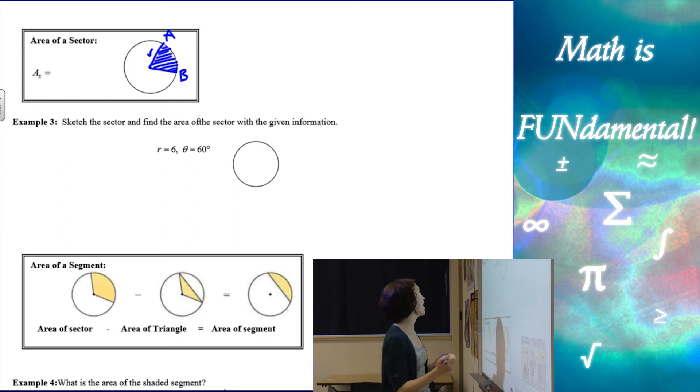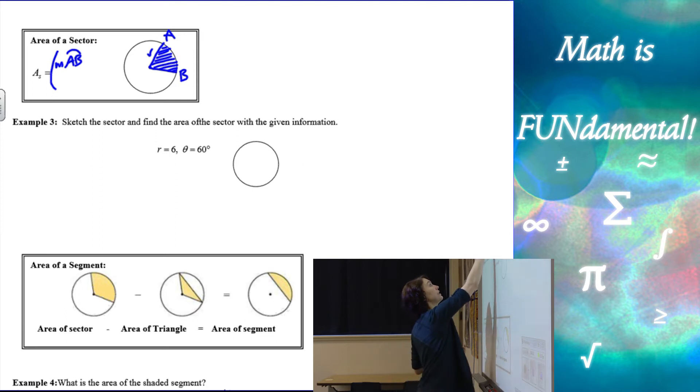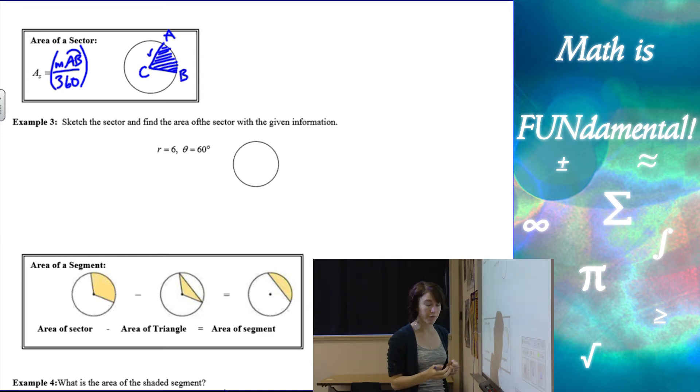So to figure out the fraction of our circle, we're going to take the measure of the arc a, b, or the angle a, let's see, let's make that c for center, so a, c, b, divide it by 360 degrees, and then multiply it by our area formula, which is pi r squared. So that'll give us our fraction of the area of the circle.